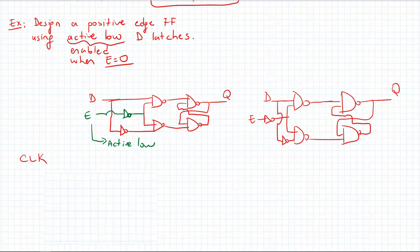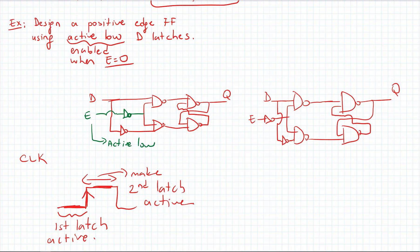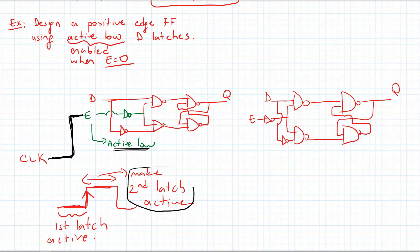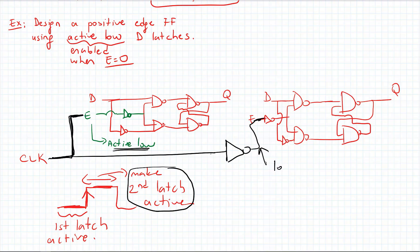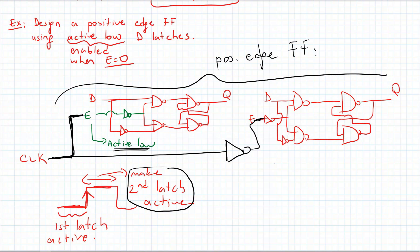With two active-low D latches, we need to figure out how to connect the clock to the enable signals to get a positive edge flip flop. We want the first latch active when the clock is low - since it's active-low, we connect the clock directly to the first latch's enable. For the second latch to be active when the clock is high, we add an inverter on the clock before connecting to the second latch's enable. This gives us a positive edge triggered flip flop using active-low D latches.